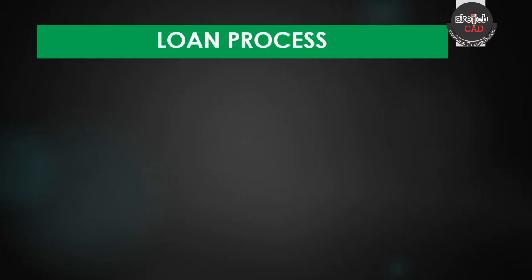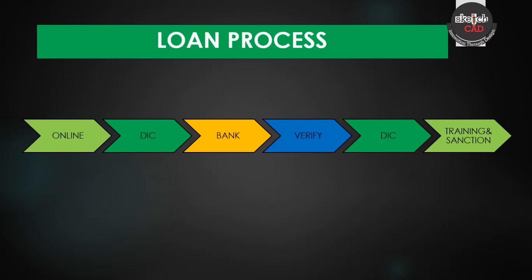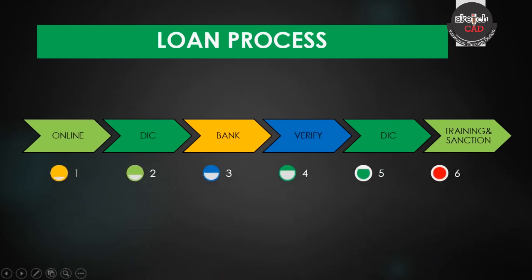Now let's look at the loan process. There are 6 stages. In the first stage, you apply online. After applying, you will go to the DIC (District Industries Centre) Office, where you will receive an interview at the Collector's Office.